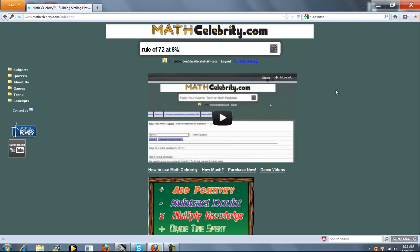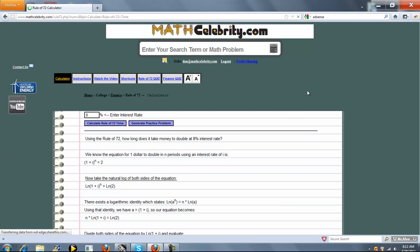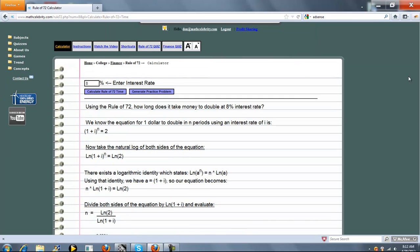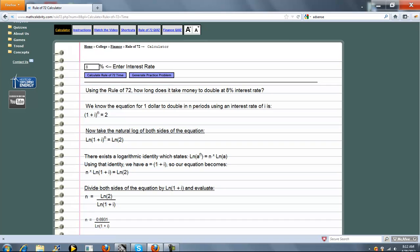Let's say 8%, a nice round number. Press the calculator or return key. What we do is take you through the Rule of 72 proof and then plug in your numbers.